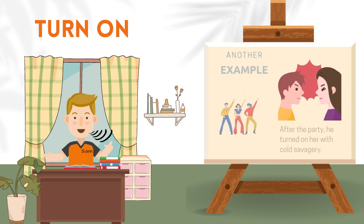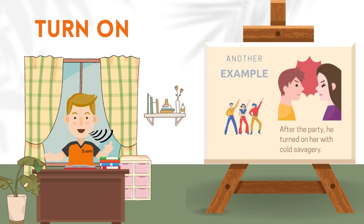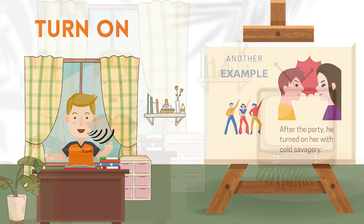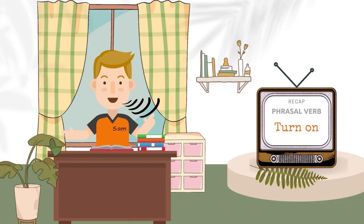Let's make another example: after the party, he turned on her with cold savagery. So now we know the first meaning of turn on means to activate something — turn on the TV, turn on your phone, or something like that. And the second meaning is attacking someone physically or verbally.